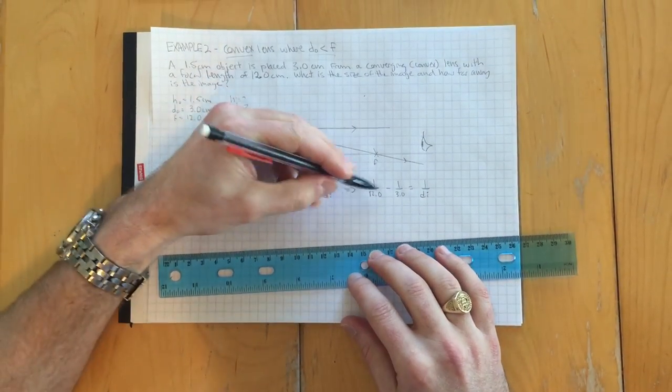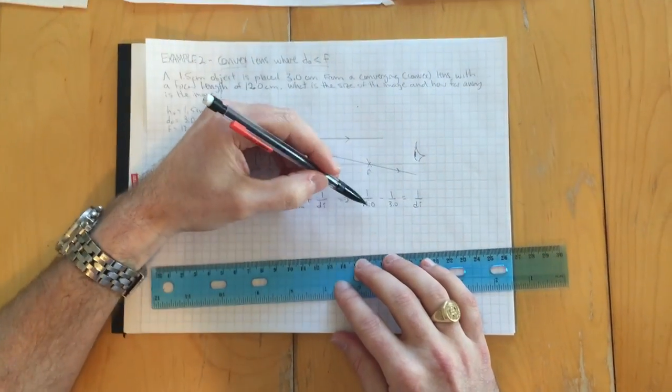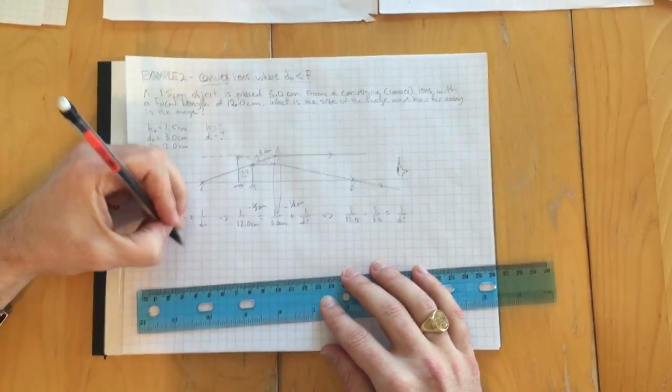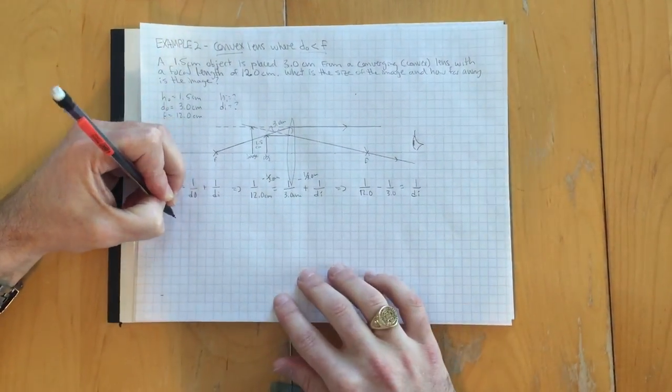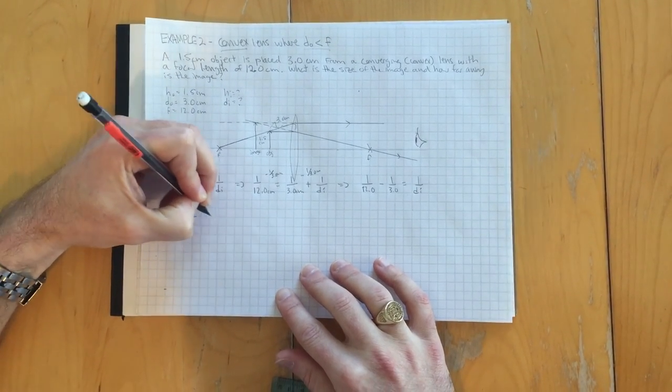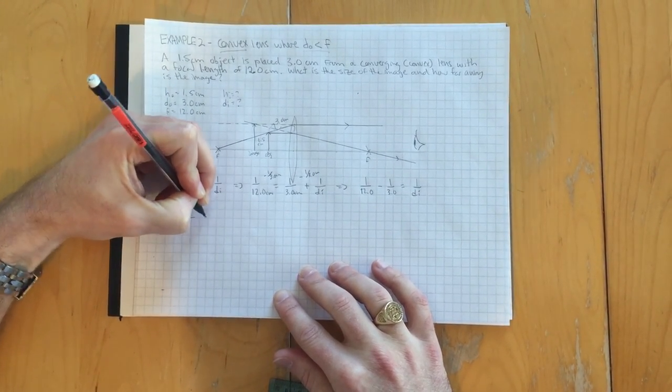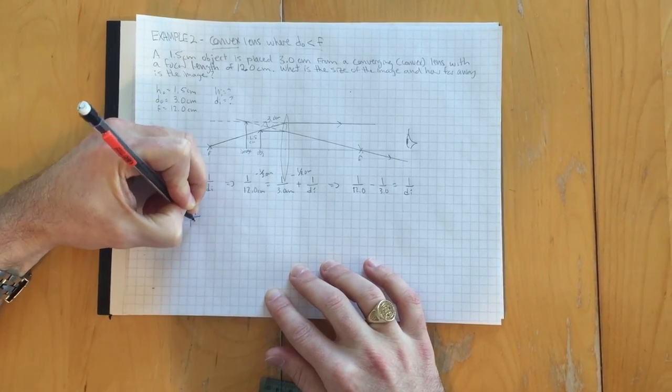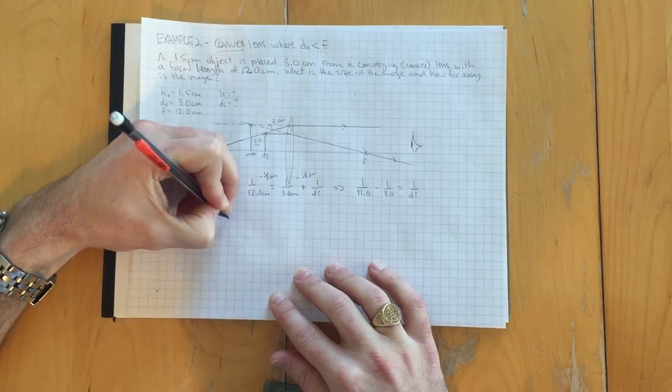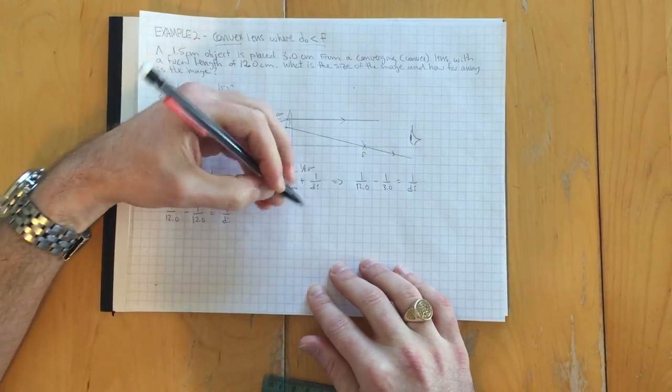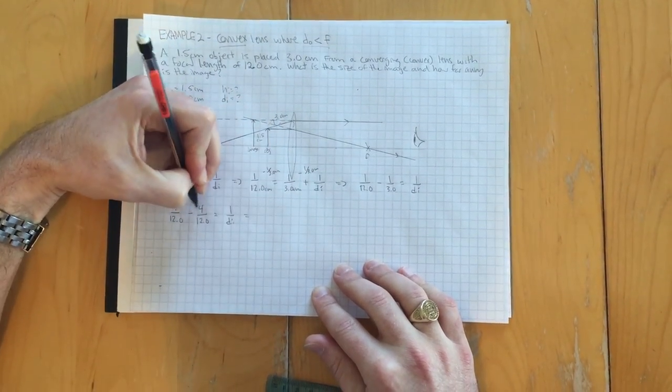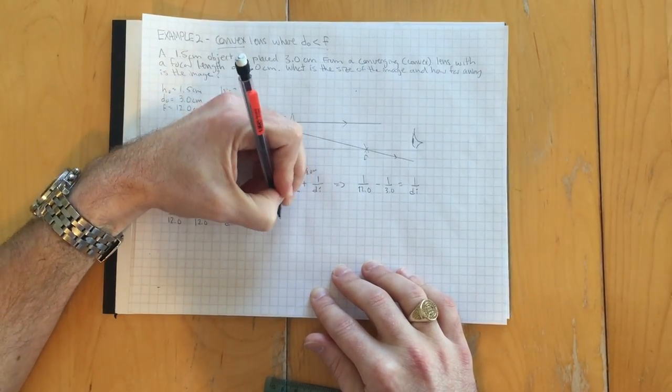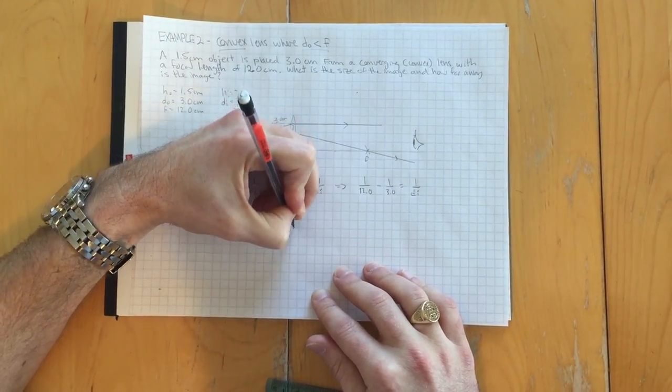Now you again, you can turn these into a fraction or a decimal if you'd like, but it's better to find a common denominator for these two things. And so the common denominator in this case is going to be one over 12 minus four over 12. One over three is the same as four over 12 equals one over DI. We get one minus four is minus three over 12 equals one over DI.